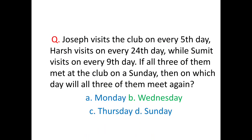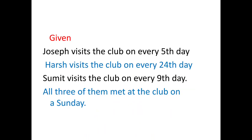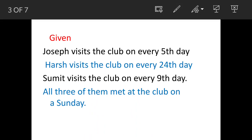After Sunday they will meet again on Wednesday — that is option B. Now we will see how. Joseph visits the club on every 5th day, Harsh on every 24th day, and Sumit on every 9th day. All three of them meet on a particular Sunday. So suppose that this is the line of Sunday.